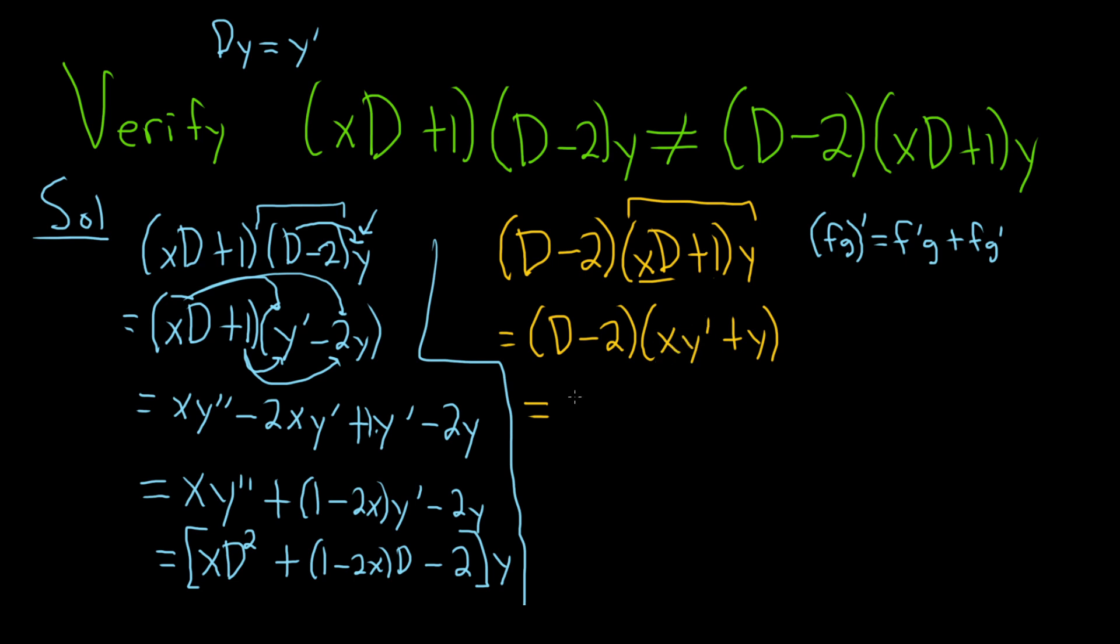So we're going to take big D and we're going to apply it to this and use the product rule. So the derivative of x is 1 times the second, which is y prime, plus the first, which is x, times the derivative of the second, so y double prime. Let me just check it. The derivative of x is 1 times the second, which is y prime, plus the first, which is x, times the derivative of the second, so you get y double prime.